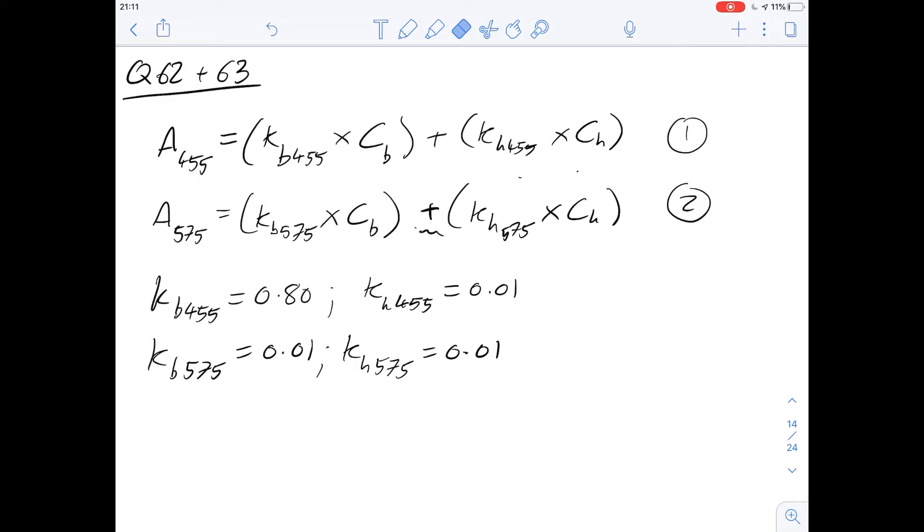Hi, I'm Carl. In this video, we're going to have a look at questions 62 and 63 of section three of the Green Booklet. This is a question about the absorptions caused by the concentration of bilirubin and hemoglobin in a sample of serum. We've got two equations here and plenty of confusing notation, but I've drawn out everything that I think is relevant to answering these questions.